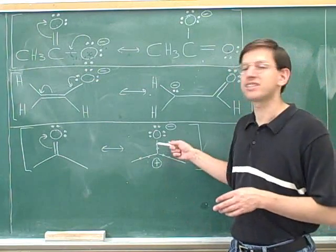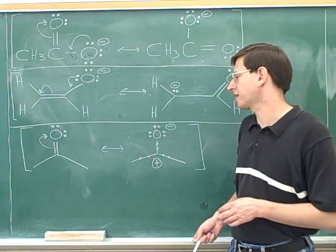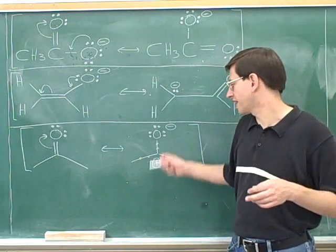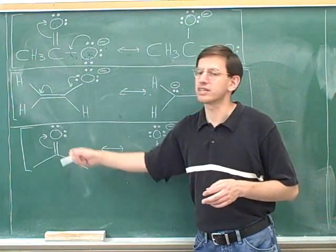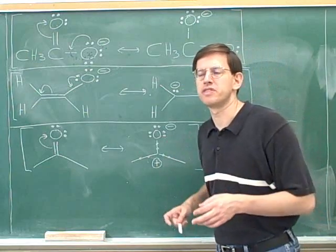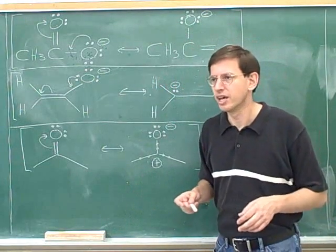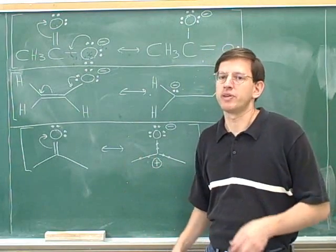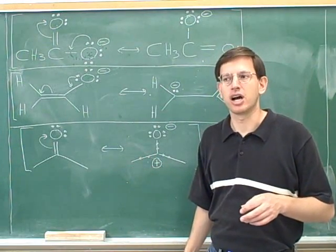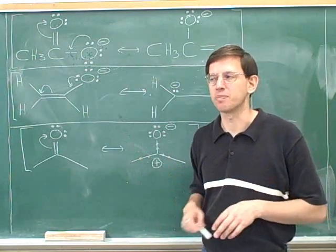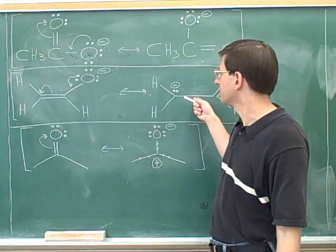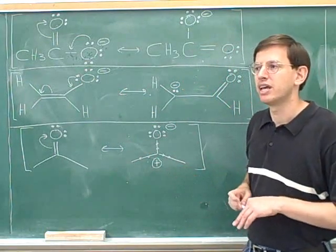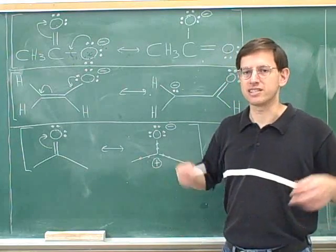That doesn't mean it's totally insignificant — this resonance structure is actually quite important for understanding the characteristics of this molecule. When we say it's less significant than the picture on the left, we don't mean it's totally insignificant. So the rules are: avoid charges; fewer charges means more significant. If you do have charges, it's better to have the negative charge on the more electronegative atom — the one further to the right in the periodic table. A resonance structure with an incomplete octet is also less significant.